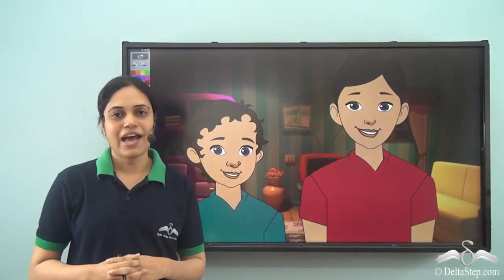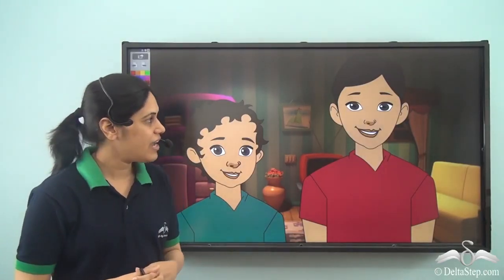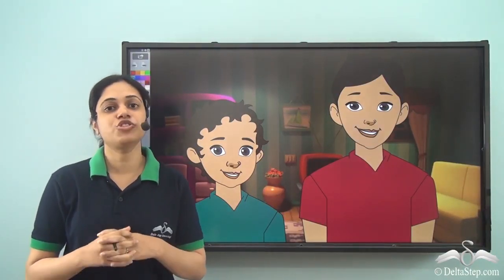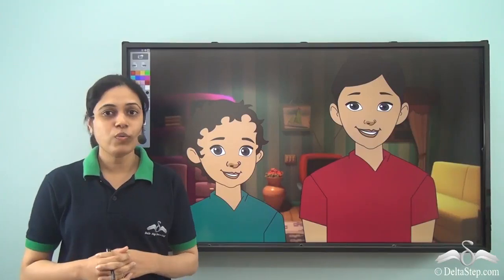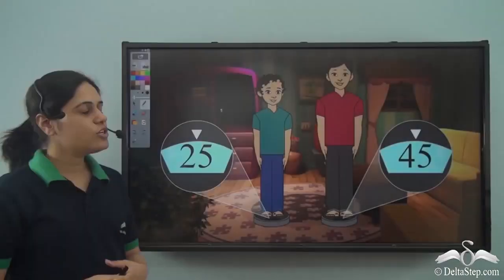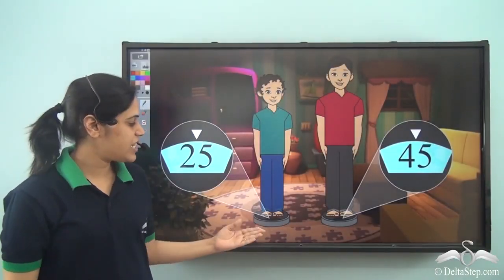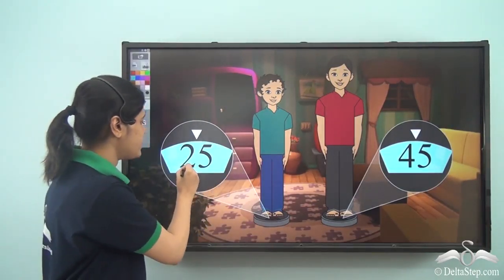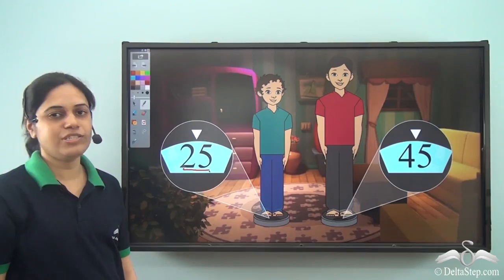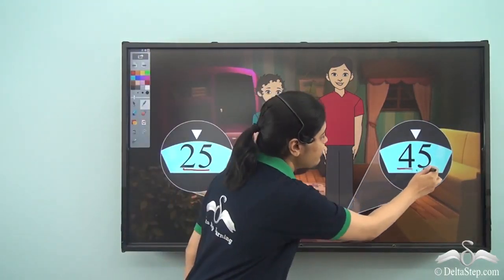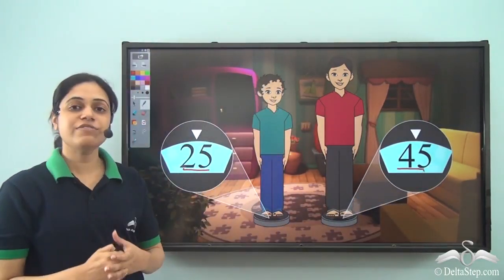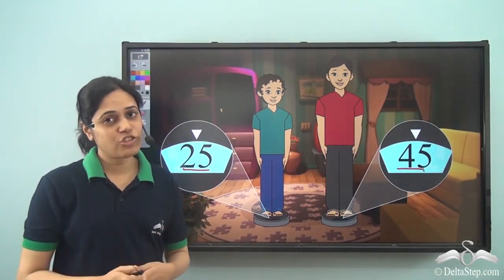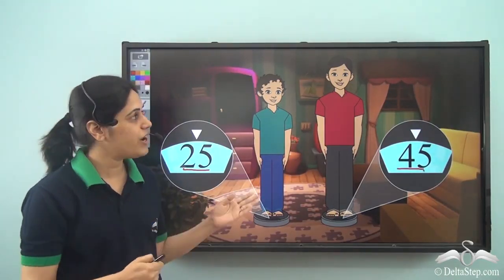One day Rohan and his elder brother had a bet. They wanted to find out who is the stronger between them — who weighs more. So both of them stepped on the weighing machines. Rohan's weight was 25 kg, whereas his elder brother's weight was 45 kg. Now, can you tell me who is actually the stronger between Rohan and his brother?